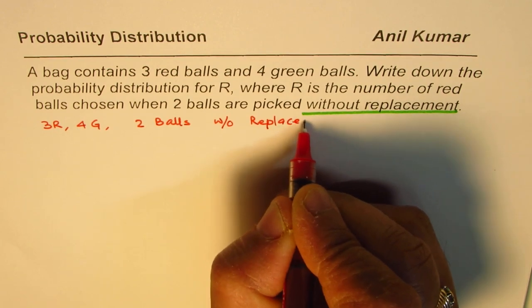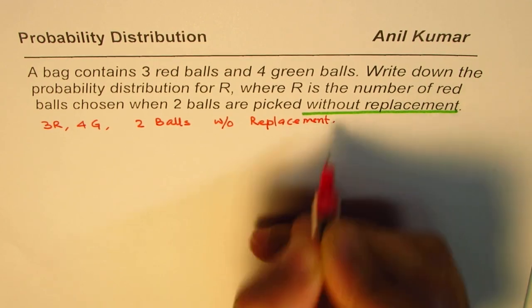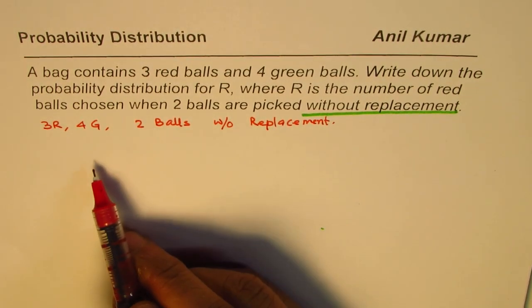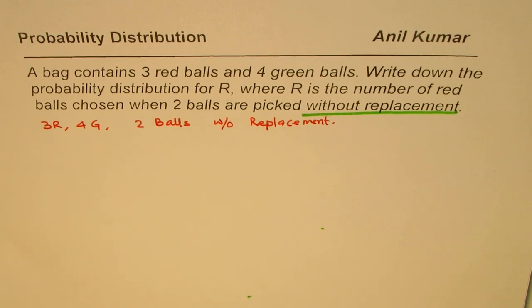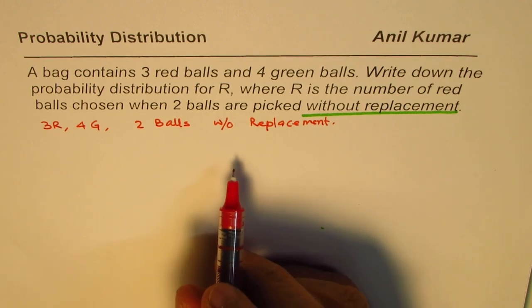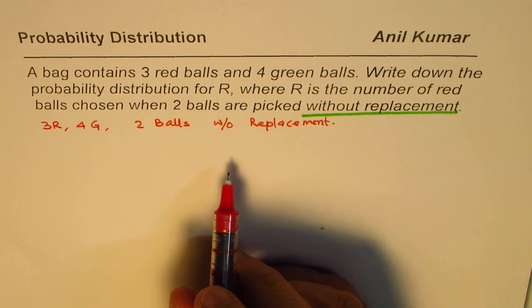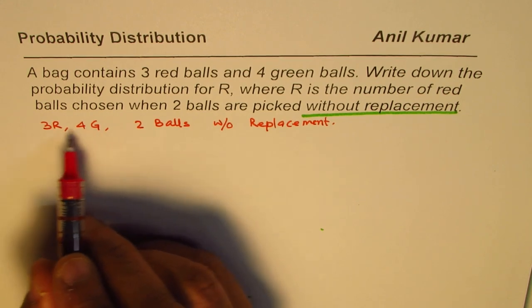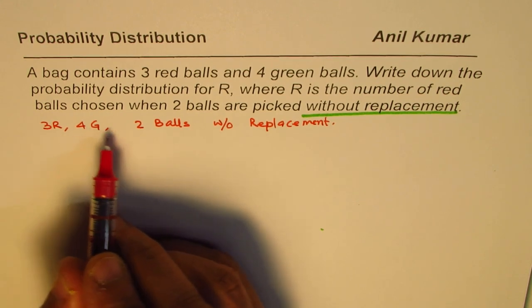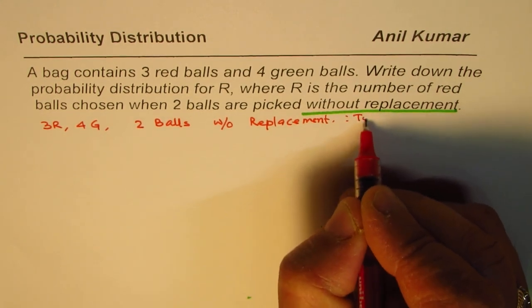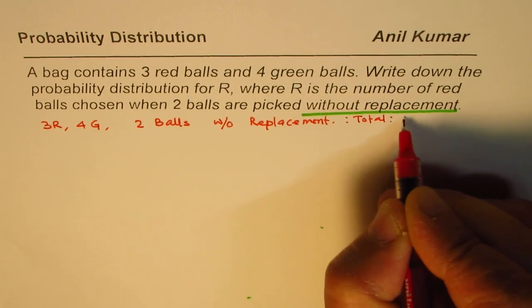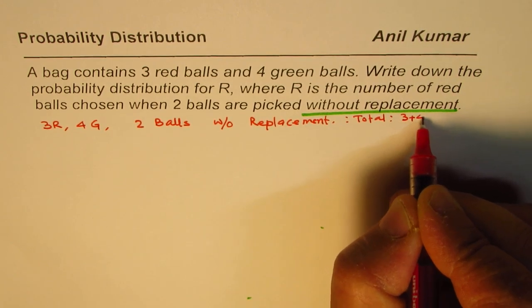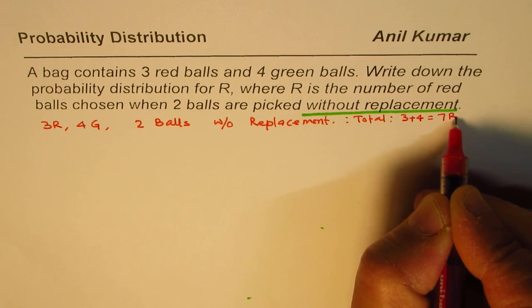Without replacement is the key. So if you pick a ball, the number of balls decreases — that's important to understand. Now, in all we have seven balls, as you can see: three plus four, which is seven balls total.